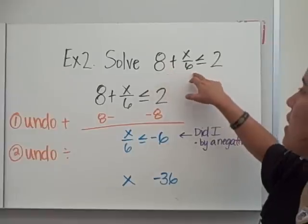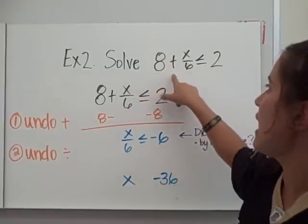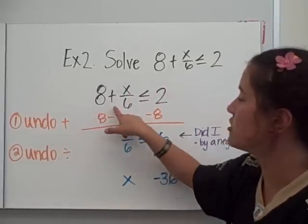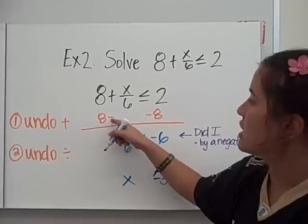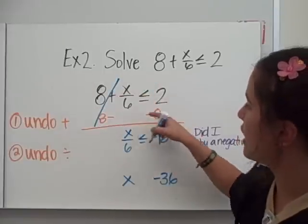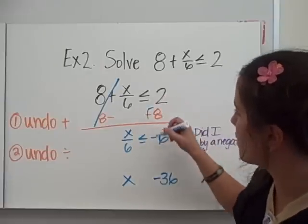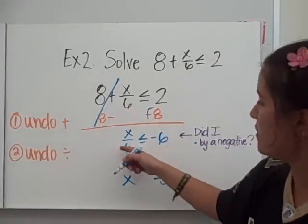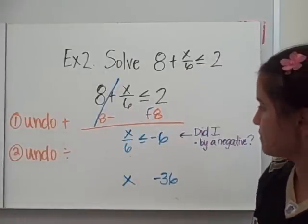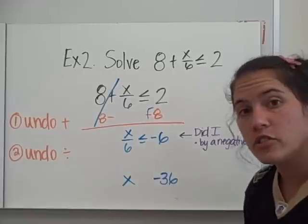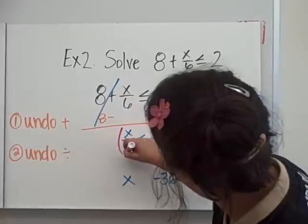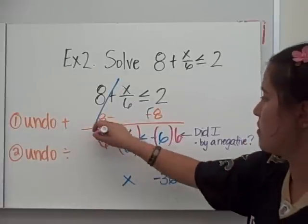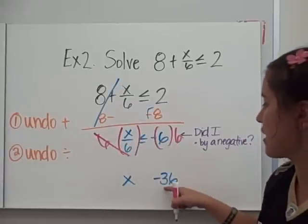Example 2 — solve. 8 plus x over 6 is less than 2. So I've rewritten the equation, and we want to undo addition again. Using the subtraction property of equality, we're going to subtract 8 from both sides, and 2 minus 8 is negative 6. So you had to touch it twice right there. I bring down my x over 6, and then I have division. I want to undo division with multiplication, so my multiplication property of equality says I can multiply the same thing on both sides. Multiply by 6 — negative 6 times 6 is negative 36.